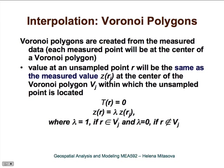We can express this mathematically as a simplification of our general equation. The trend will be 0, and the value at any grid point will be a weighted measured value, where the weight will be 1 if the point is located within the polygon and 0 if it is not. This essentially says that points within the polygon are assigned the same value as the center of the Voronoi polygon.